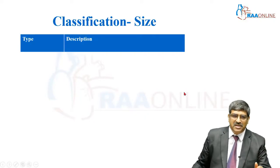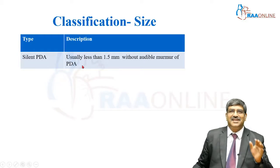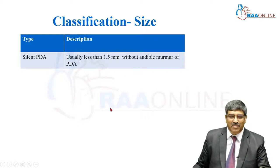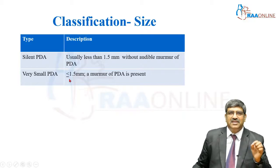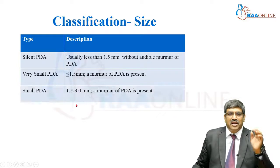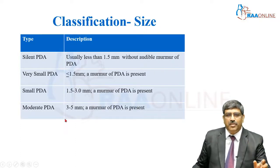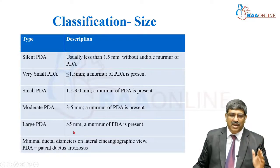Coming to the classification by size: it is called silent PDA when the size is less than 1.5 mm and there is no audible murmur. Very small PDA is less than or equal to 1.5 mm but a murmur is present. Small PDA is 1.5 to 3 mm. Moderate PDA is 3 to 5 mm, and large PDA is greater than 5 mm.